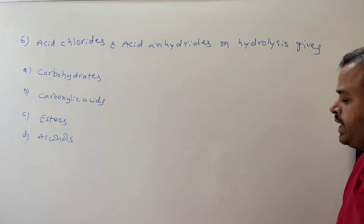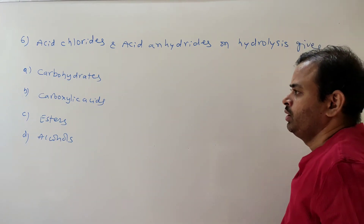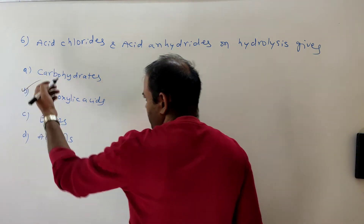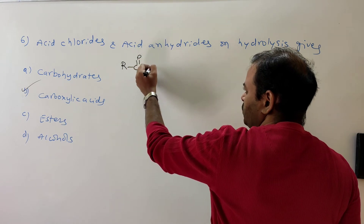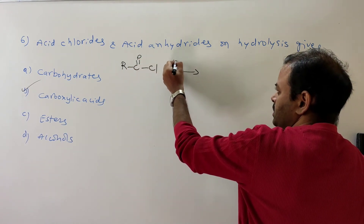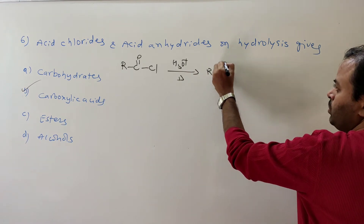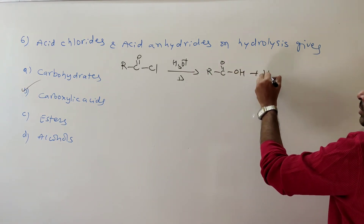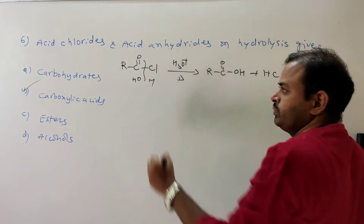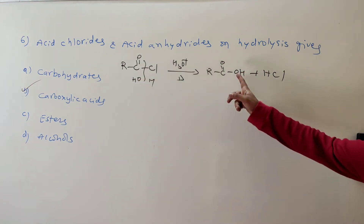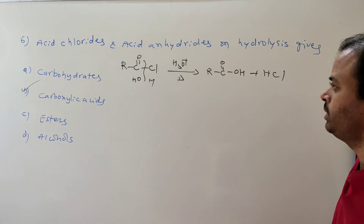Sixth question: acid chlorides and acid anhydrides on hydrolysis give what? It must be carboxylic acid. Acid chloride is RCOCl. On hydrolysis with H3O+/H+, it gives RCOOH plus HCl — carboxylic acid and HCl. The main product is carboxylic acid.